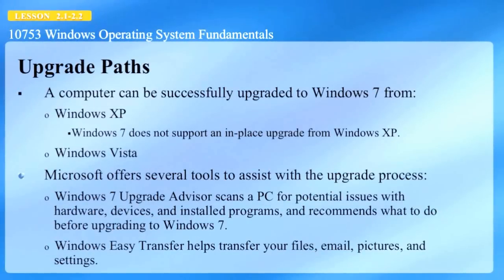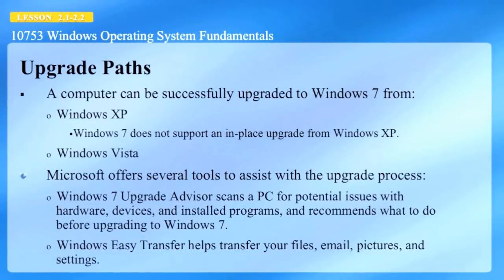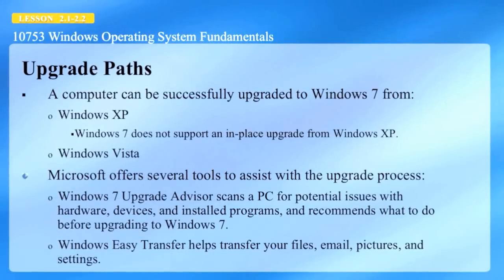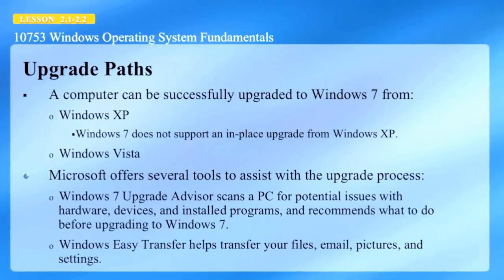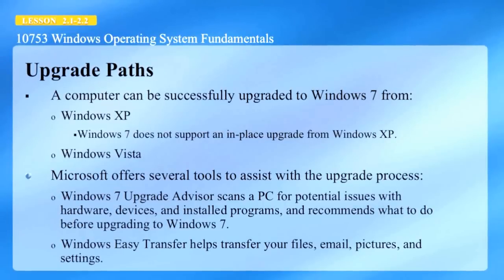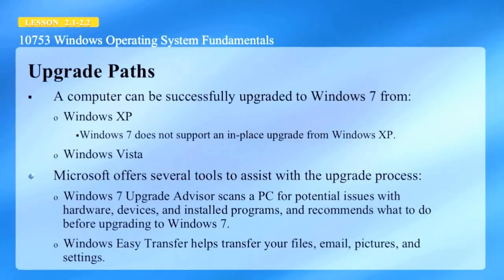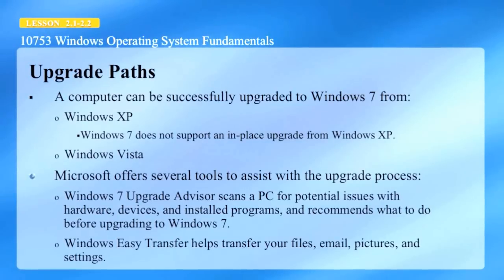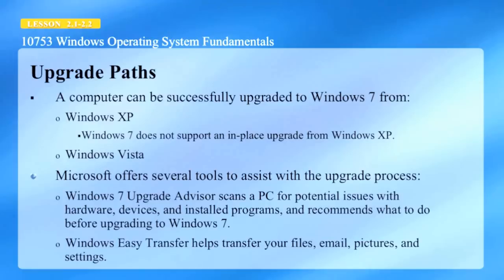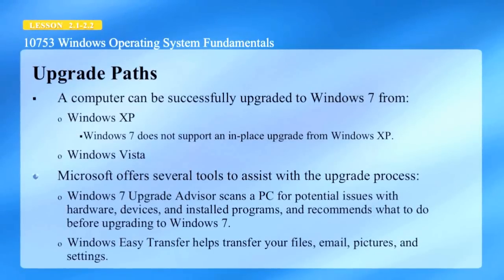Here we're looking at upgrade paths. A computer can be successfully upgraded to Windows 7 from Windows XP, but it does not support in-place upgrade — meaning you have to move all your files and reinstall all your applications. Windows Vista supports in-place upgrade. Microsoft has several tools to help with the upgrade process: the Windows 7 Upgrade Advisor, and the Windows Easy Transfer, which transfers your files, email, pictures, and settings to your new PC.